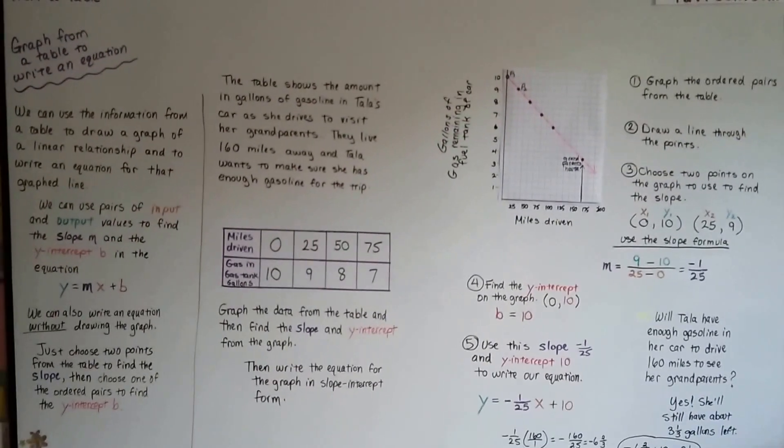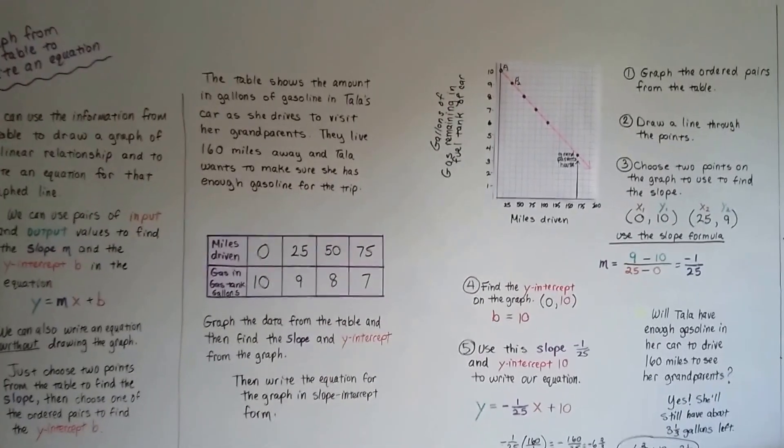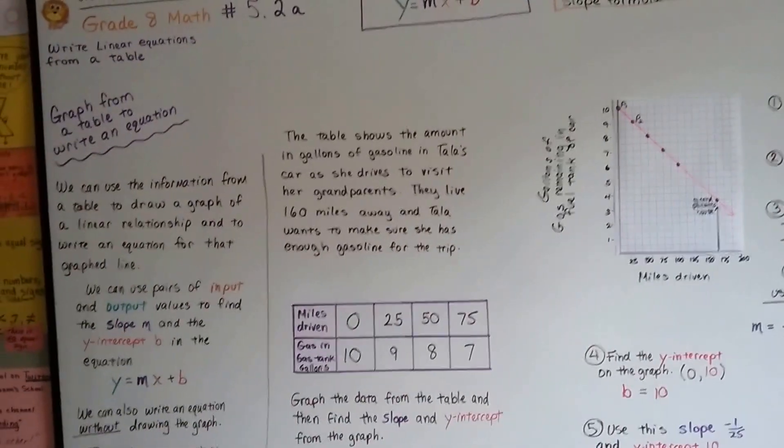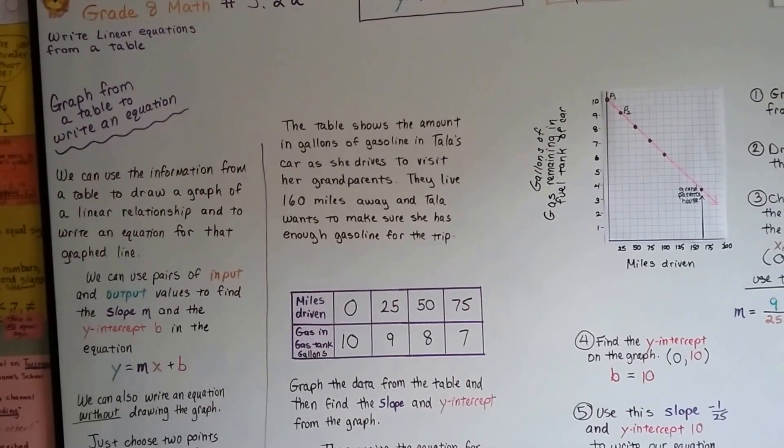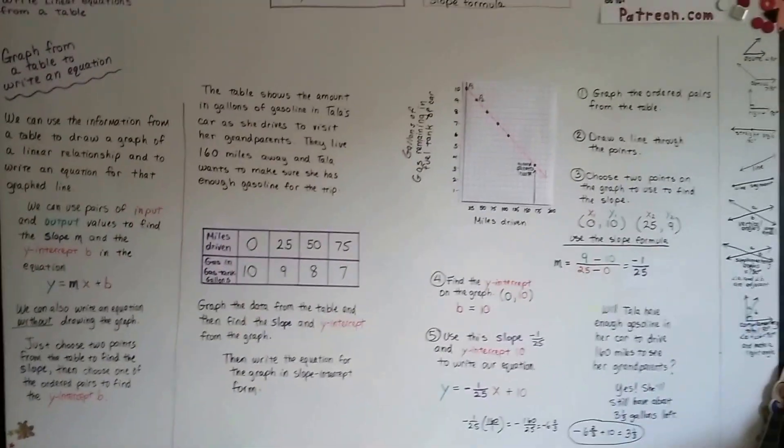So that's how we graph from a table to write an equation. In the next video, we're going to write it from just a table. That'll be 5.2b.